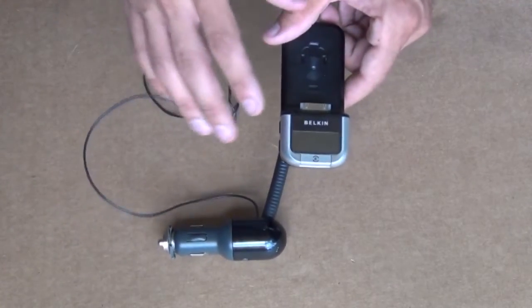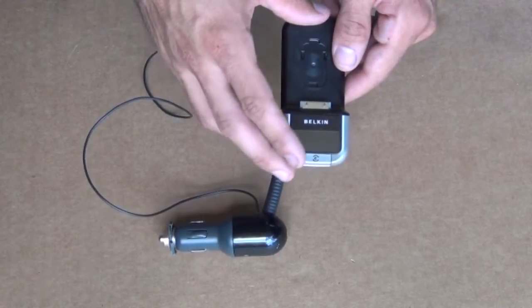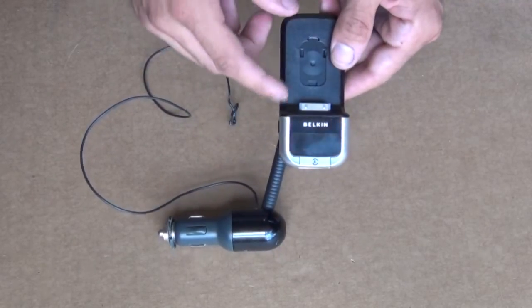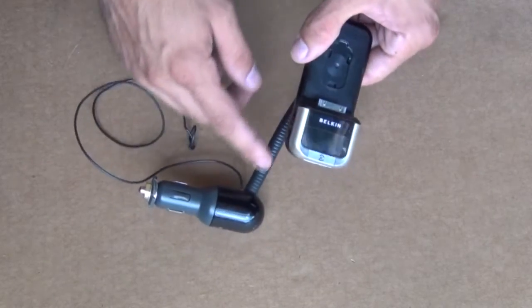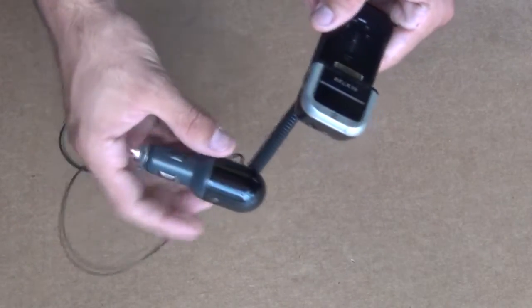So real quick before we start, I just want you to understand that the antenna comes from the main circuit board that's here in the main part of the device and it goes down this loom into the power adapter.